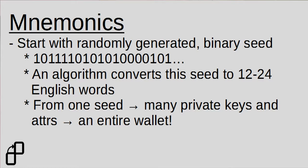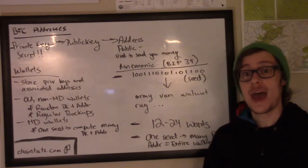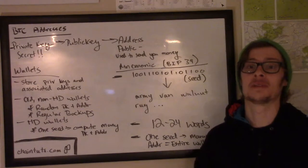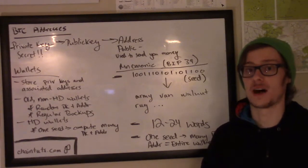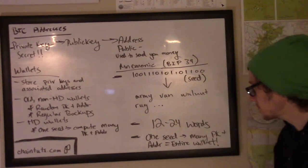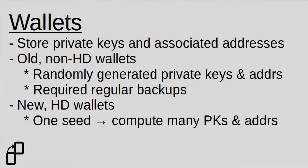So you could go from some seed that's just a random large number to something like 'army van walnut rug,' and so on — from 12 to 24 English words. This dictionary is the same, and any wallet system that implements BIP39 can use this system to generate, retrieve, and recover your funds from a backup. So you can go from one seed and generate many private keys and addresses, storing an entire wallet's worth of transactions and funds, all by remembering 12 to 24 English words.